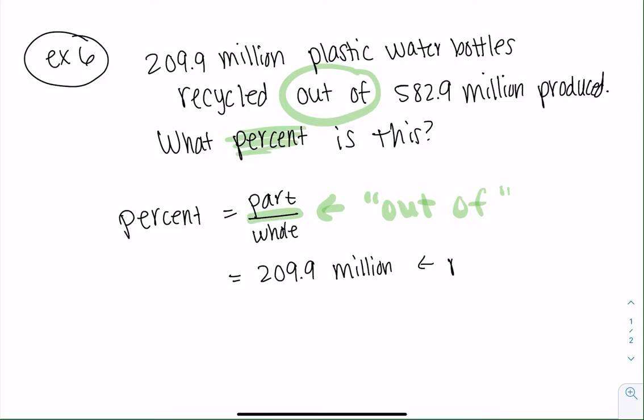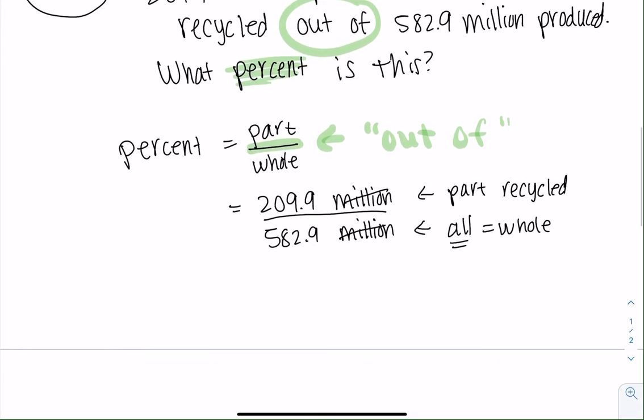Right, that's the part recycled. And then the whole would be all of the water bottles. So that would be 582.9 million. Right, all would be the whole. And then the fact that they're both out of millions means we can kind of just ignore the word million. And we just divide those two numbers. So on my calculator, I do 209.9 divided by 582.9, and I think I got 0.36 with a bunch of extra decimal places.